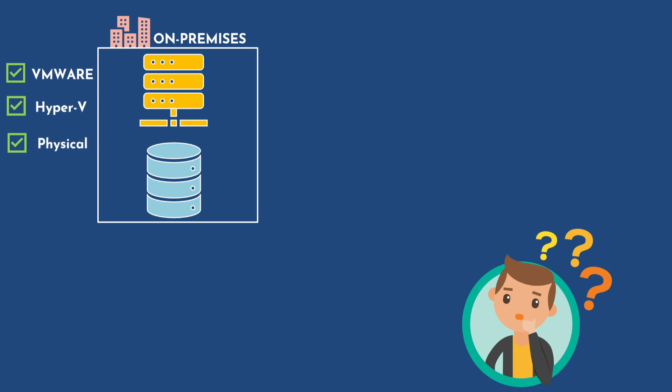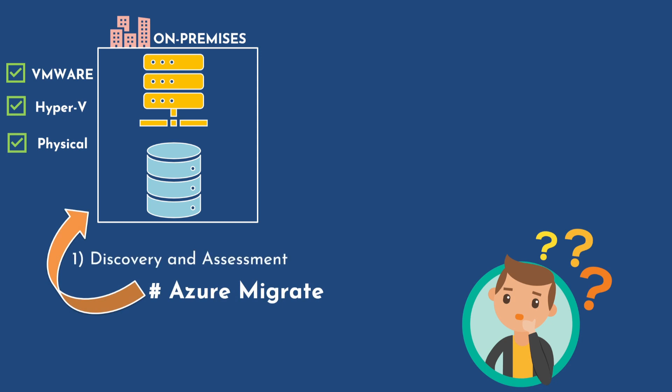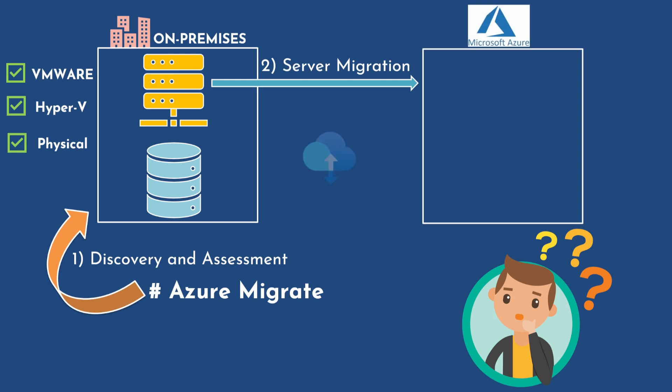There are various data migration options provided by Azure. The first one is Azure Migrate, which performs the initial discovery and assessment and prepares the server for migration. Then it migrates the server running on on-premises or any other public cloud infrastructure to Azure cloud VMs or web apps.